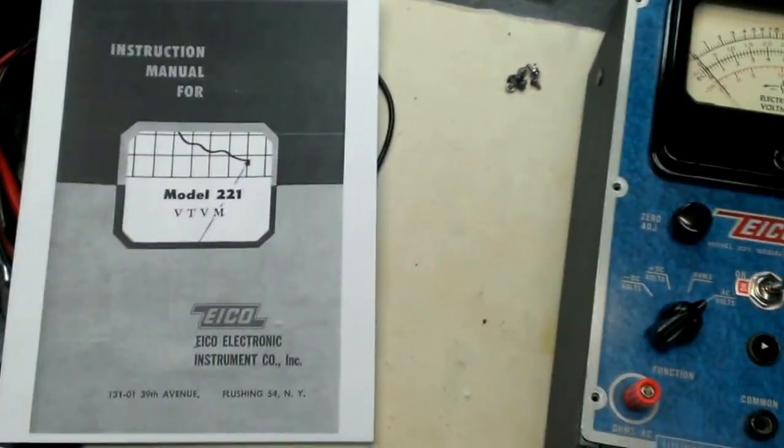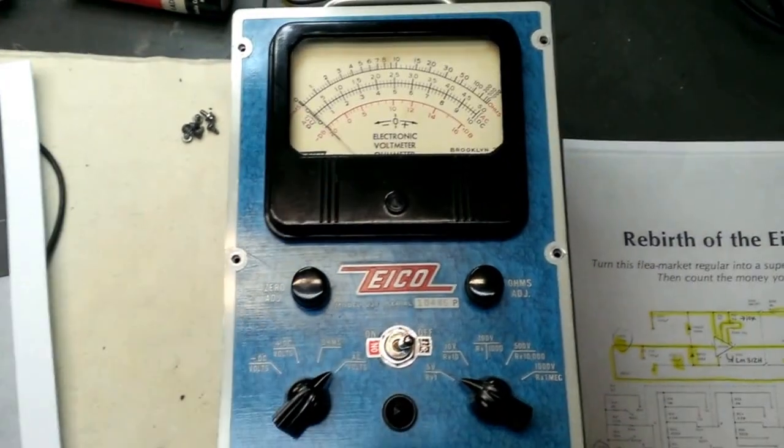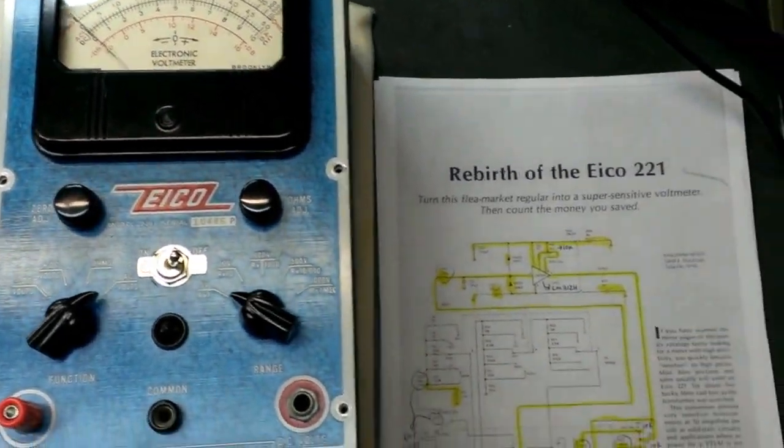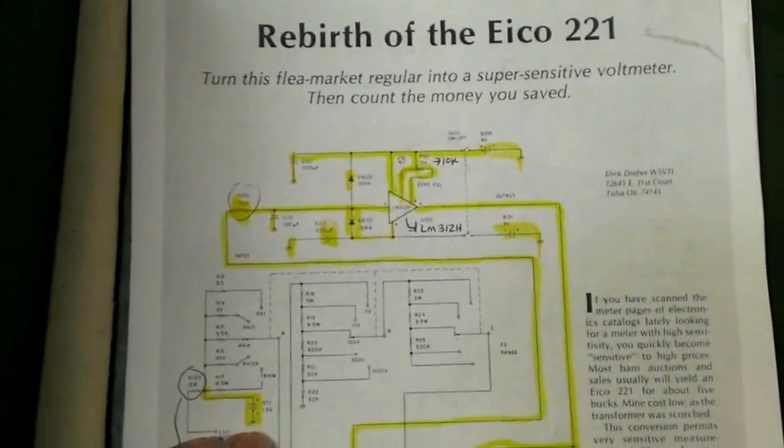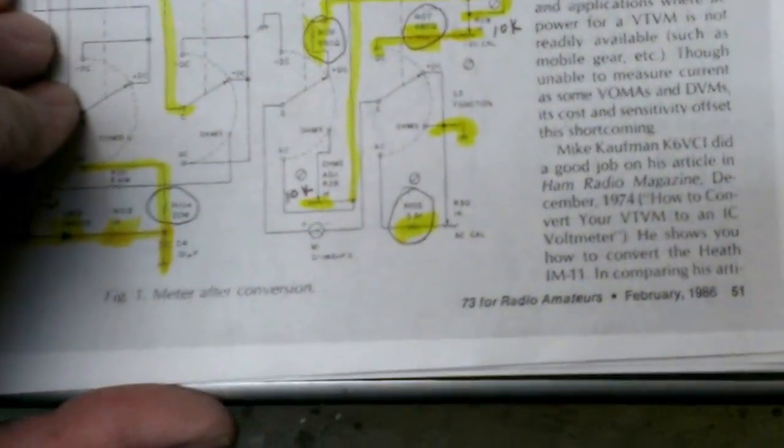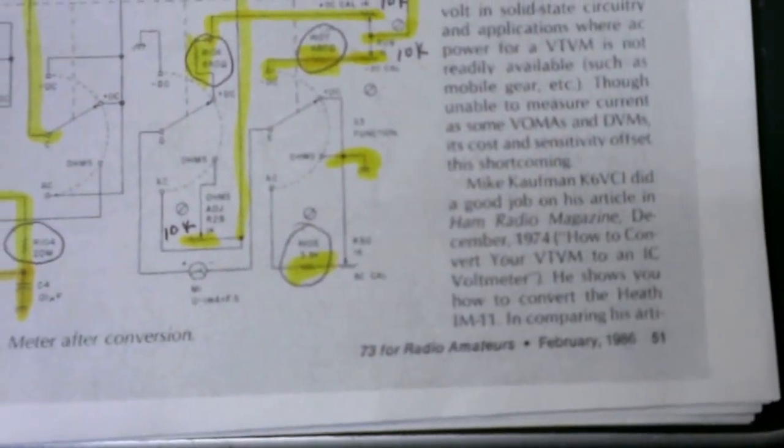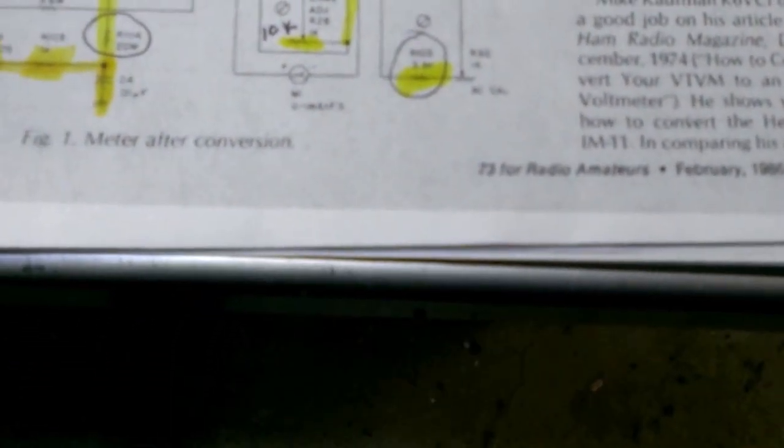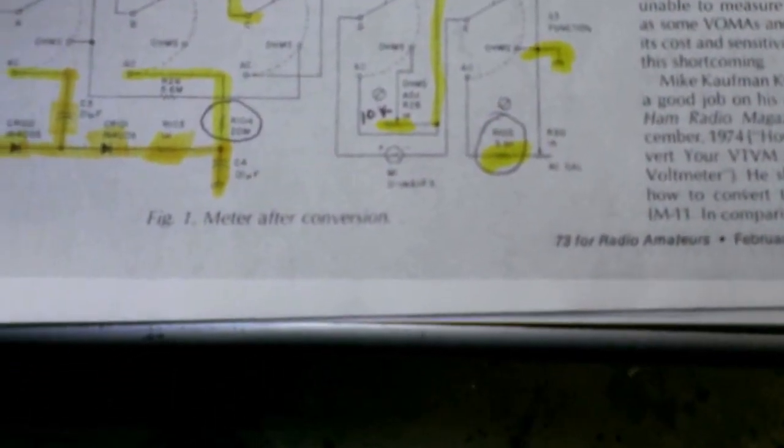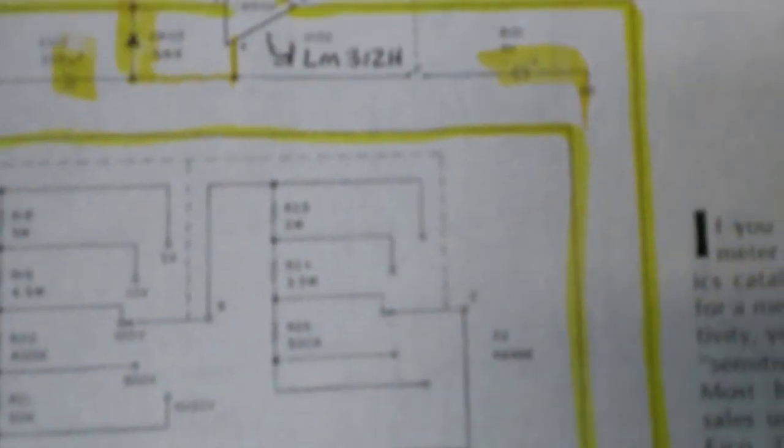But one of the interesting things I found while looking for a replacement transformer was an article called The Rebirth of the Ico-221. And this was from 73 Magazine back in 1986, February of 1986. And it was written by Dick Dreher, W5VTJ, I believe.